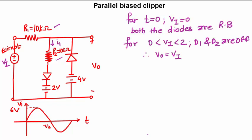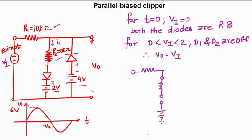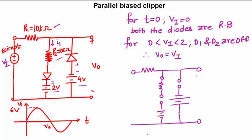For t = 0, Vi is 0. Both diodes are reverse biased because the positive of the voltage source is connected to the negative of the diode and the negative is connected to the positive of the diode. Until we overcome 2 and 4 volts, the diodes won't be forward biased, so they remain open circuited. For 0 to 2 volts, D1 and D2 are off. The resistance is present but the diode is open circuited, making the 2V source redundant. Similarly, the other diode is open circuited because the voltage is less than 4 volts, so the diode is again open circuited and we have Vo.